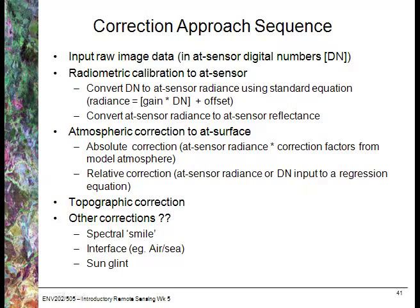Looking at the correction approach sequence: the input is raw image data as digital numbers. The first step is to convert digital numbers (DNs) to at-sensor radiance using a standard equation provided with the dataset — for example, a standard equation for Landsat data. We then convert from at-sensor radiance to at-sensor reflectance, which accounts for the incoming solar radiation at that location, date and time of image capture. We then correct for atmospheric attenuation to get down to at-surface reflectance.